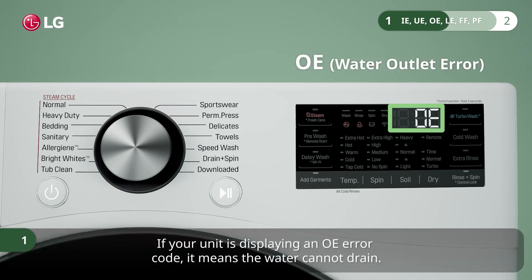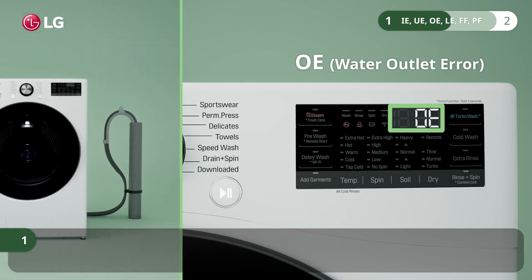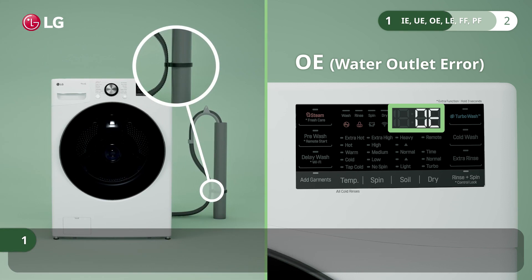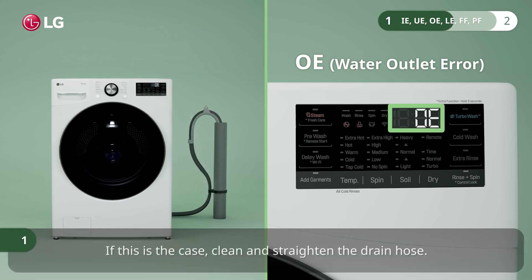If your unit is displaying an OE error code, it means the water cannot drain. Check whether the drain hose is kinked or clogged. If this is the case, clean and straighten the drain hose.